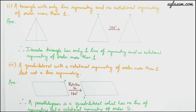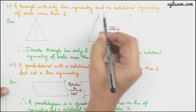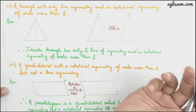The second part asks for a triangle with only line symmetry and no rotational symmetry of order more than one. We have drawn an isosceles triangle because it has only one line of symmetry and no rotational symmetry of order more than one. You can see the x mark returns to the same position when folded through the line of symmetry through the middle.